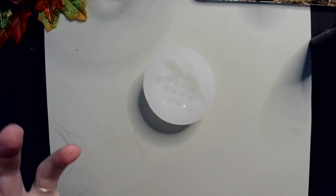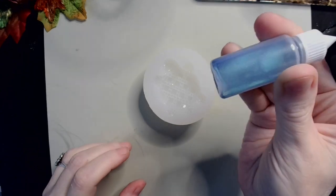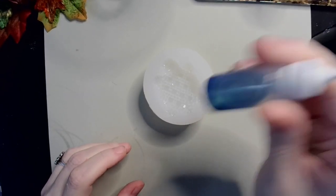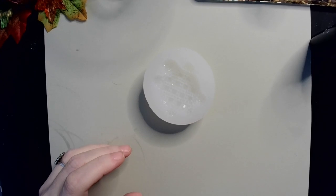So what I've done is I have mixed up some Forest King chameleon powder with some alcohol and just made an alcohol ink out of it, and we're going to add that to our resin.